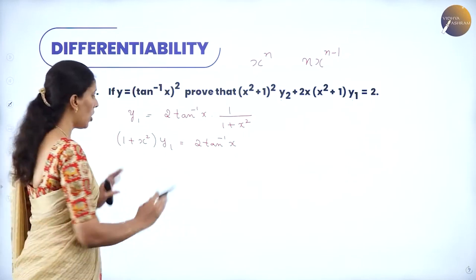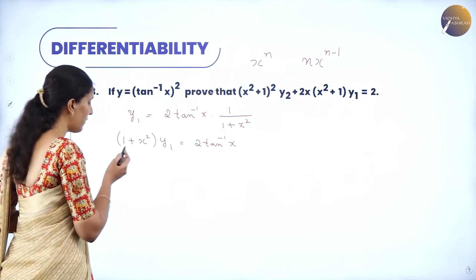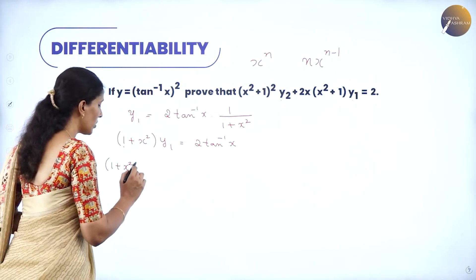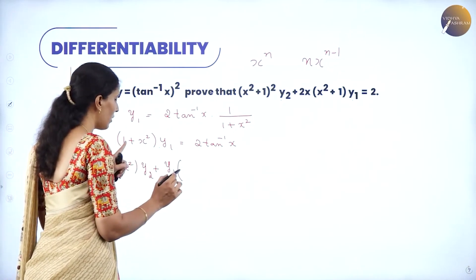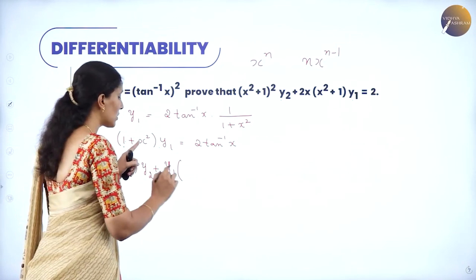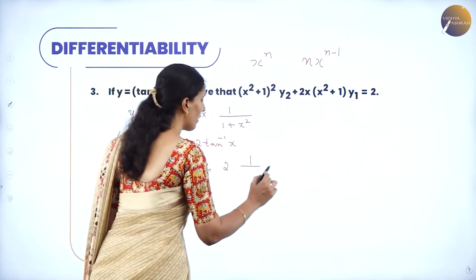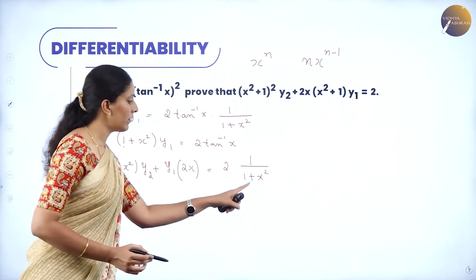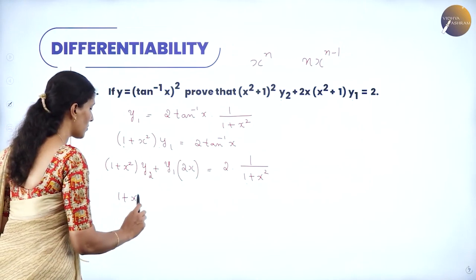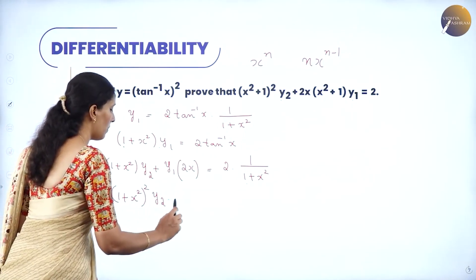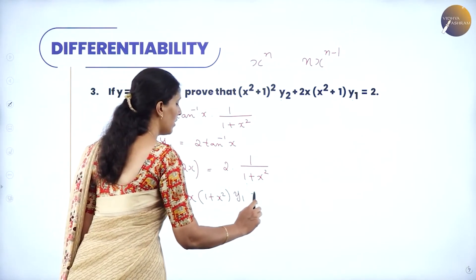Shift (1+x²) to the left hand side: (1+x²)y1 = 2tan⁻¹x. Now differentiate again using the product rule. Left side: first function (1+x²) times derivative of y1 gives y2, plus second function y1 times derivative of (1+x²) which is 2x. Right side: 2 times derivative of tan⁻¹x is 2·1/(1+x²). Now multiply throughout by (1+x²): (1+x²)²y2 + 2x(1+x²)y1 = 2.